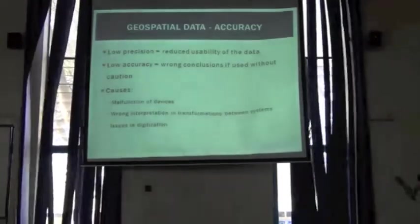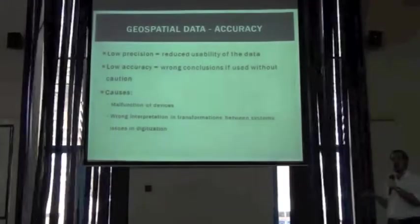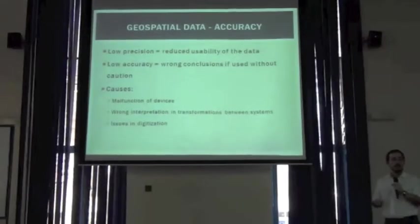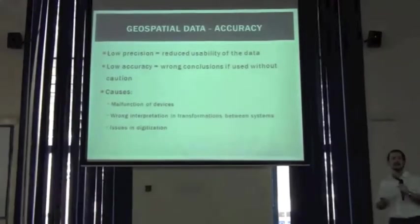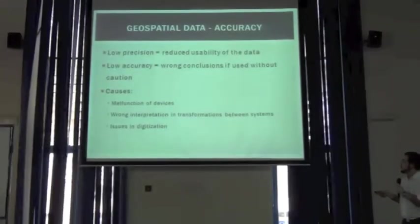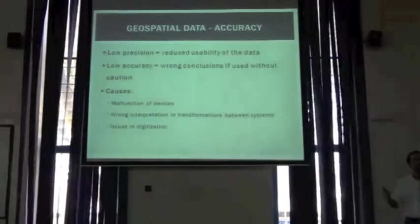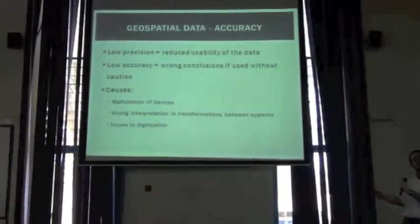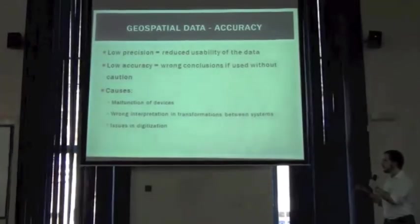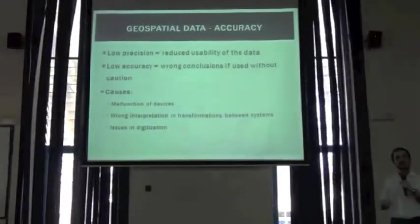There are several sources for low accuracy in geospatial data. Some of them are the malfunction of devices where the GPS doesn't work and gives us wrong coordinates. But it can also be due to wrong interpretation when transforming coordinates into different systems or when geo-referencing, and issues when digitizing the data.